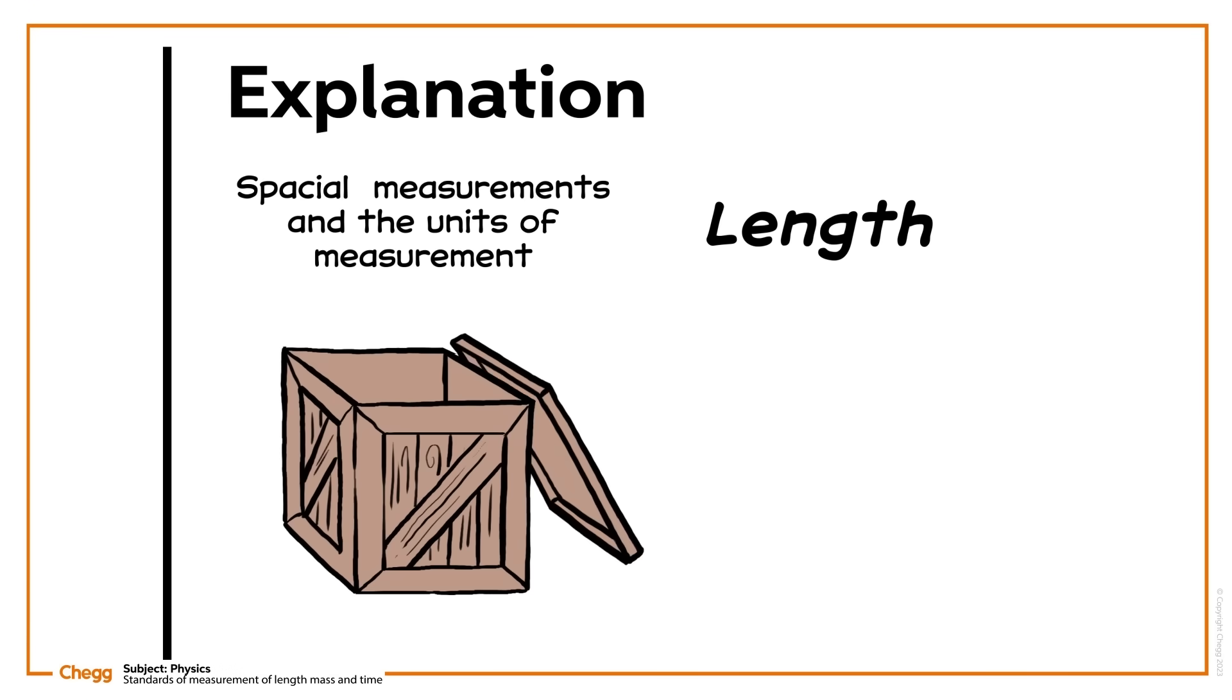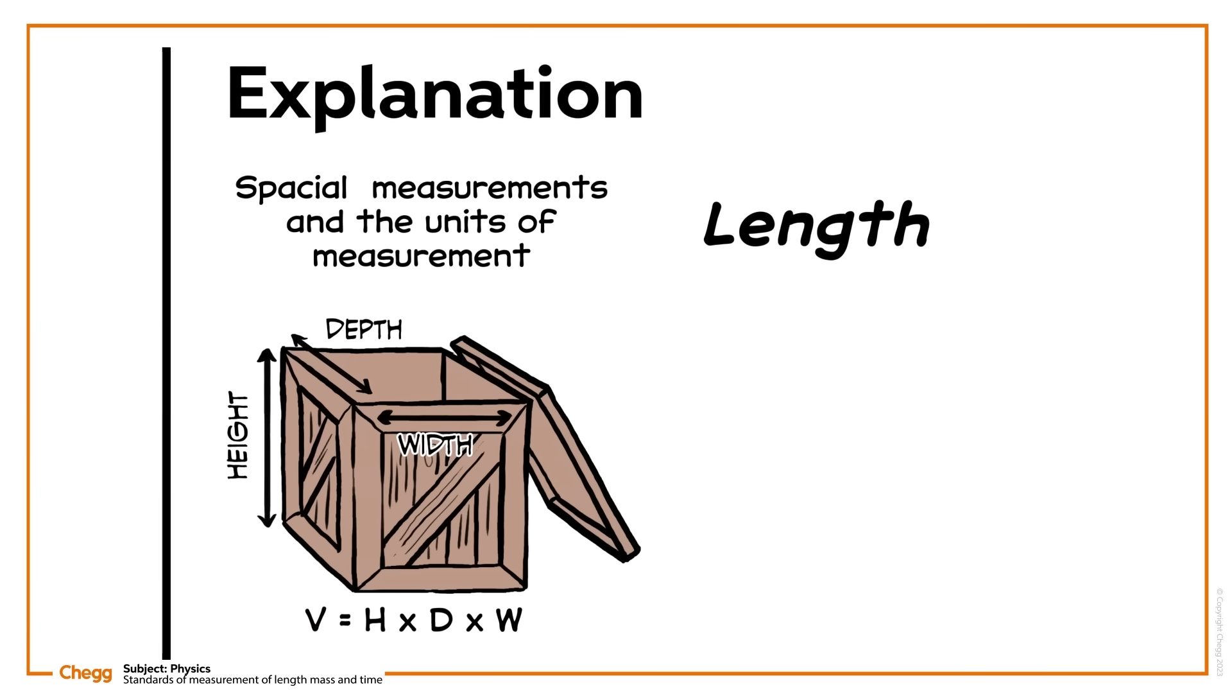A box crate with an open top, for example, has a width, depth, and height. You could use these measurements to figure out how much space, or volume, there is within the crate.